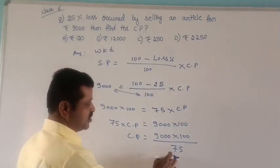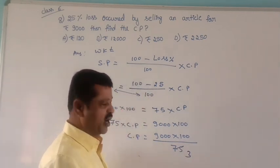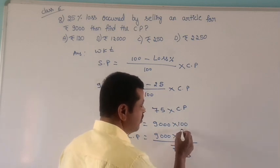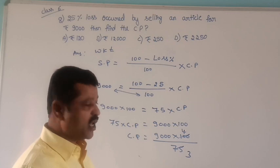Divide this: 25 goes into 75 three times, 25 goes into 100 four times. 3 times 3 is 9, 3 times 4 is 12.